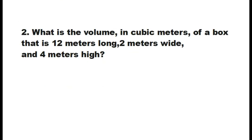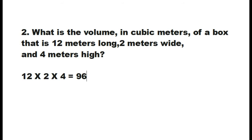Next, what is the volume in cubic meters of a box that is 12 meters long, 2 meters wide, and 4 meters high? So, 12 times 2 times 4 equals 96. The answer is 96.